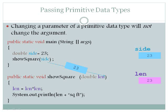Passing primitive data types. Changing the parameter of a primitive data type will not change the argument. Below, we see both the main method and a method showSquare. In the main method, the double variable side is set to 23.